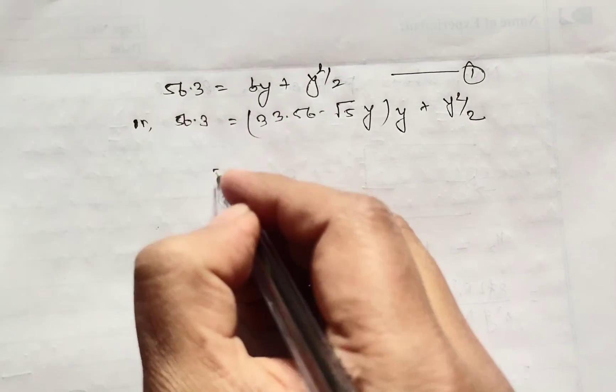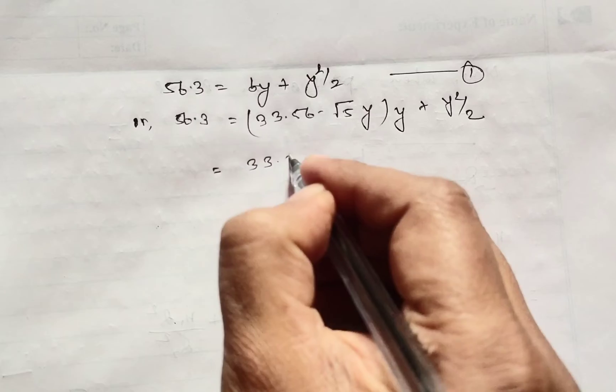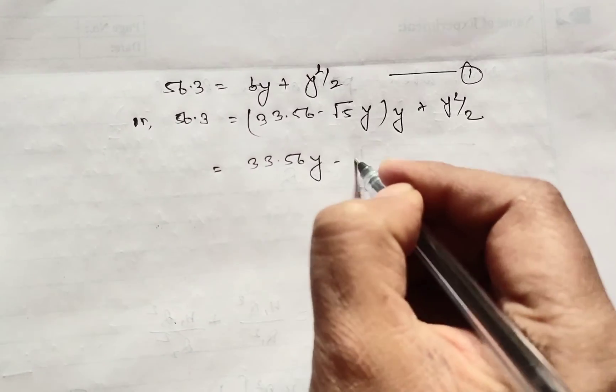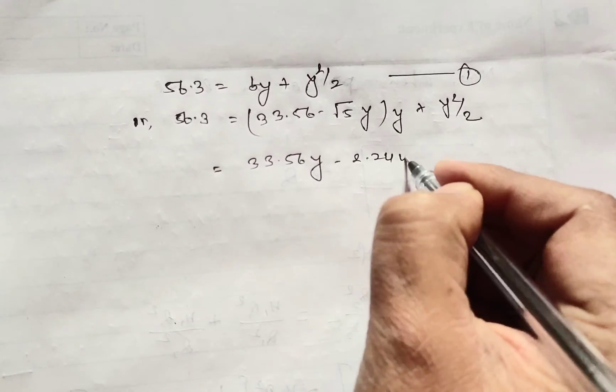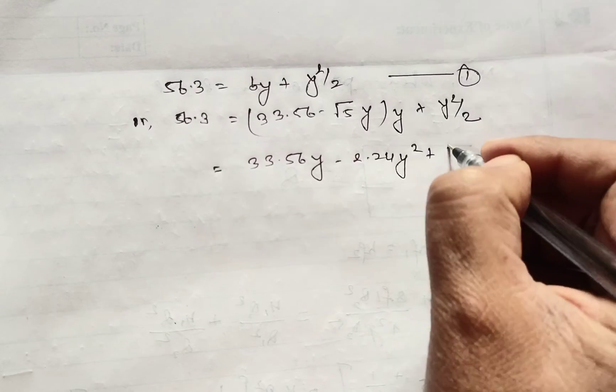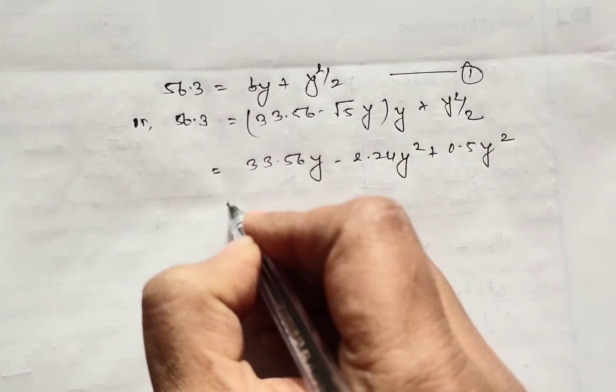This can be written as 33.56Y minus 2.24Y square plus 0.5Y square, or 33.56Y minus 1.74Y square.